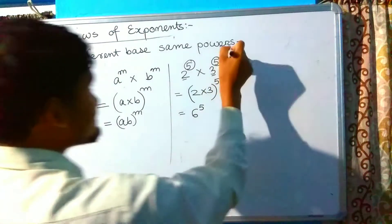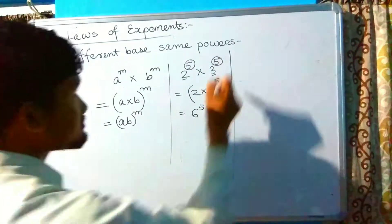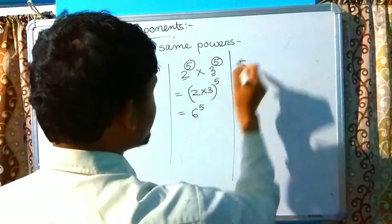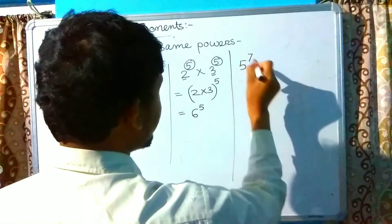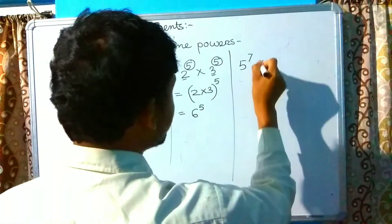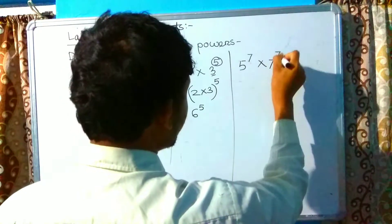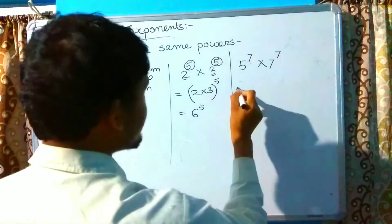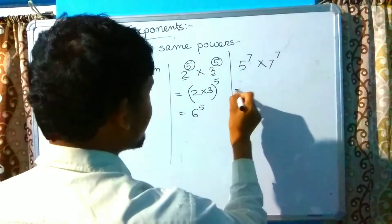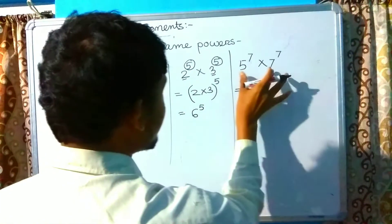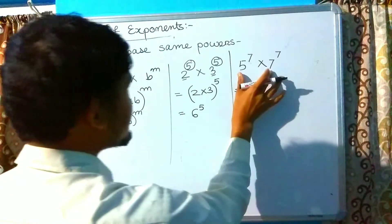Another example: 5 raised to the power 7 multiplied by 7 raised to the power 7. Since the powers are the same, this equals 5 multiplied by 7, whole raised to the power 7, which is 35 raised to the power 7.